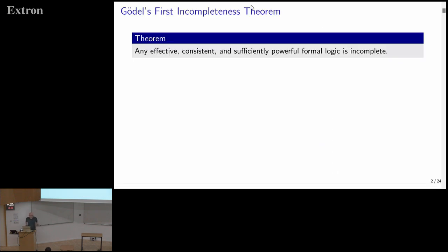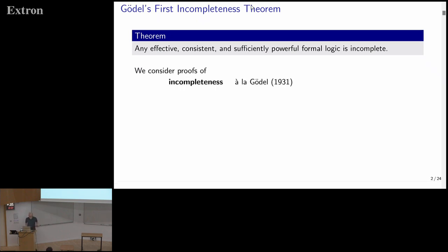Gödel's first incompleteness theorem can be stated as: any effective, consistent, and sufficiently powerful formal logic is incomplete. Today, we'll consider proofs of this incompleteness theorem that was originally proven by Gödel.